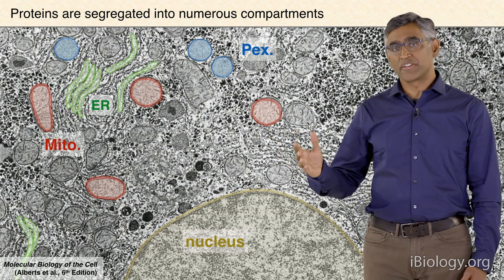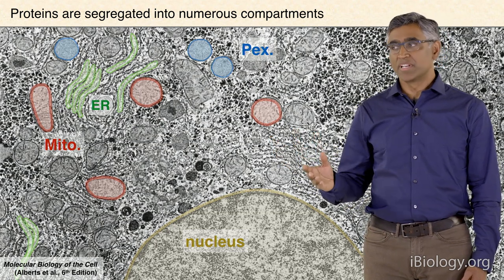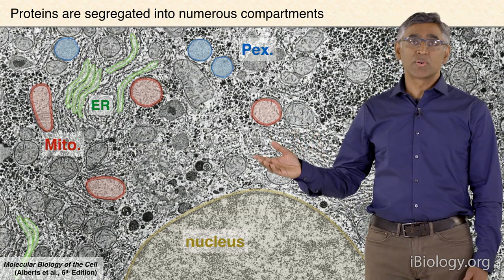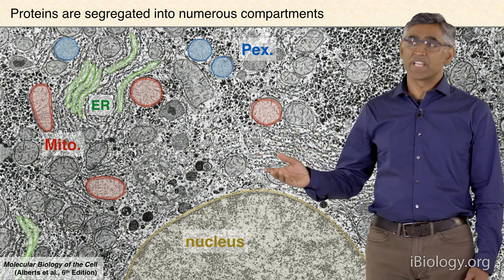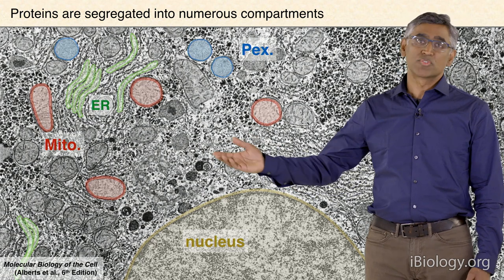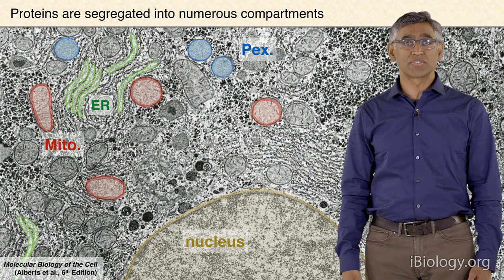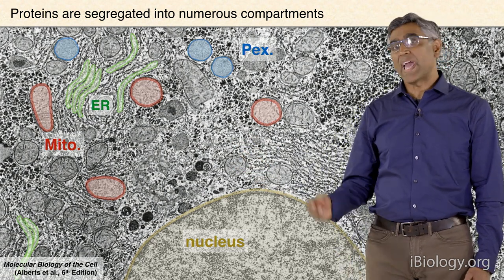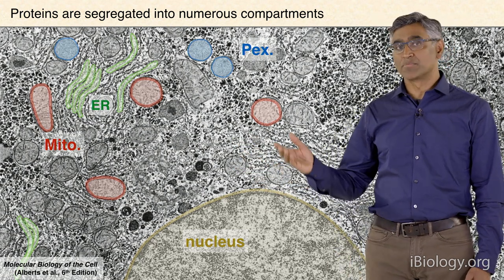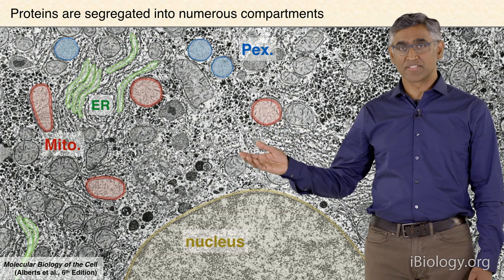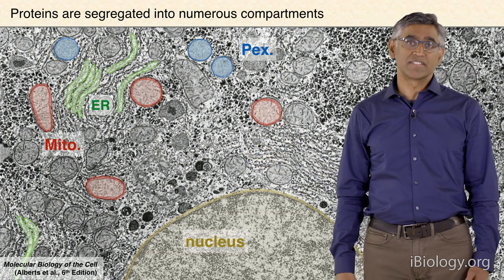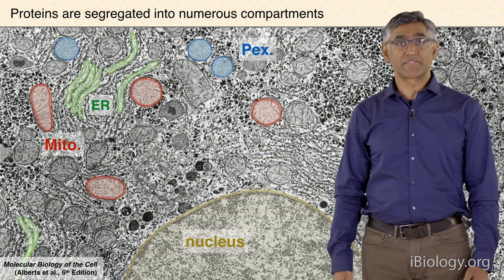In addition, because of failures in these processes from time to time, the cell has also evolved machinery for degrading proteins that fail to get to the right place. What we learned in the second part of the series is that even slight increases in the amount of failures is sufficient to cause diseases.